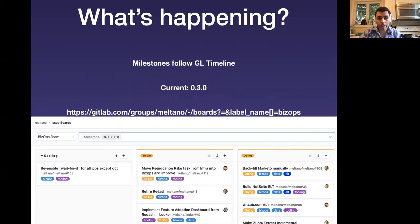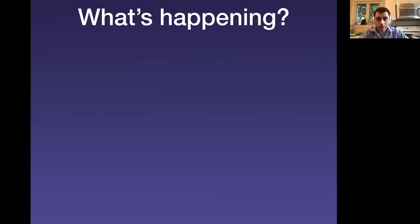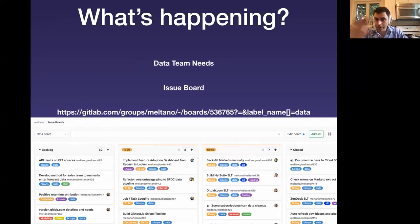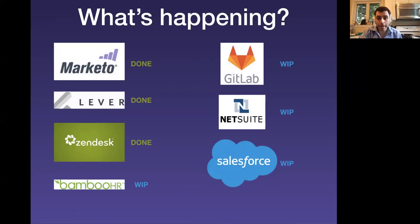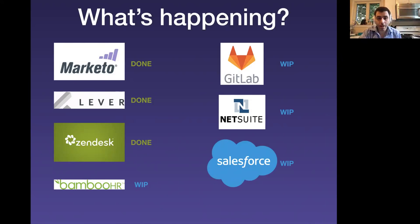What are we currently working on? Our milestones follow the GitLab milestone timeline. We're currently on milestone 0.3.0, and there's a link to the boards where you can see two boards: the BizOps team boards and the data boards. From a standpoint of what we've done so far, we've created extractor loaders and transformers — ELTs — for Keto, Lever, and Zendesk. BambooHR, GitLab, NetSuite, and Salesforce are works in progress. GitLab and NetSuite are about 95% done, so there's already a lot of data we can pull.